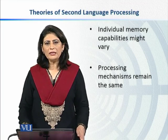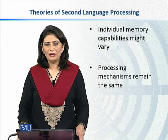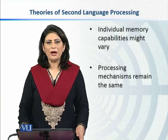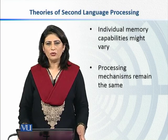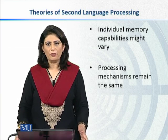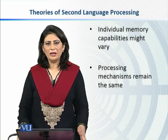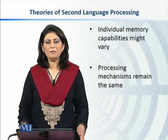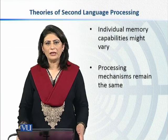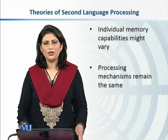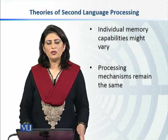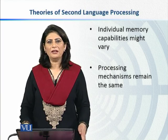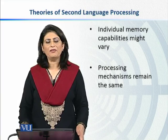The basic argument these approaches put forth is that individual memory capabilities might vary — different individuals might have different capabilities in terms of storing information. Yet the processing mechanism that takes place in the mind of each individual is the same. So the processing mechanisms are universal; however, individuals differ in the memory span they may have at their disposal.